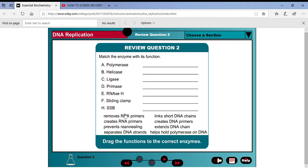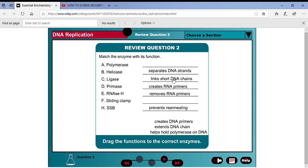You can match the enzyme to its functions: removes the primer, that's RNase H; creates the primer is primase; prevents re-annealing or reattaching, that is the single-stranded binding proteins, SSBs; separates the DNA is helicase; links the last little bit of chains together would be ligase. There is no DNA primer, so that's just a trick. Extends the DNA, elongates the DNA, is the polymerase, and helps hold it all together is the sliding clamp.